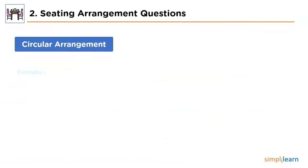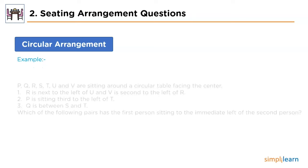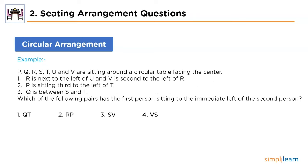Moving ahead, we'll look at the sample question for circular sitting arrangement. P, Q, R, S, T, U and V are sitting around a circular table facing the center. The conditions are: R is next to the left of U and V is second to the left of R; P is sitting third to the left of T; and Q is between S and T. We are supposed to find the alternative pair where the first person is sitting to the immediate left of the second.